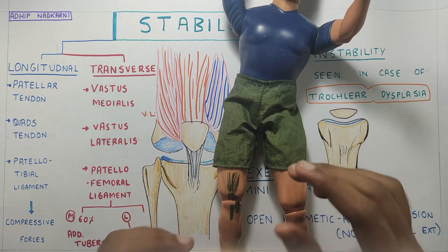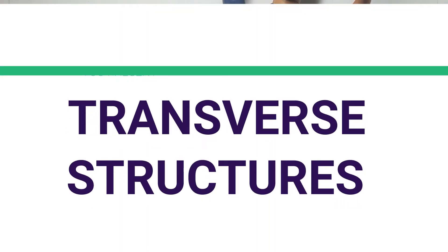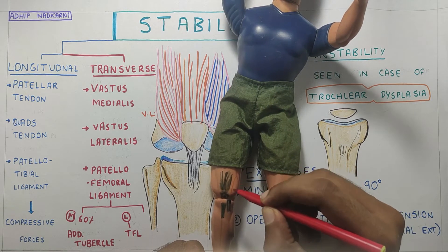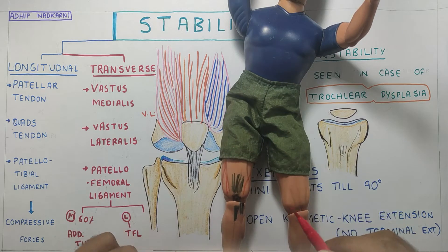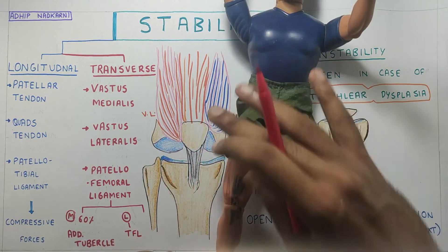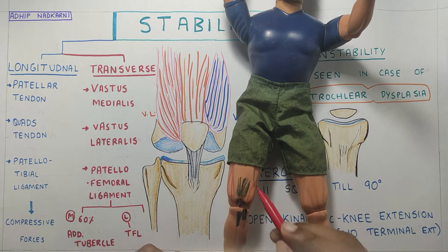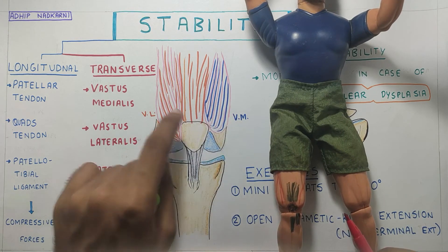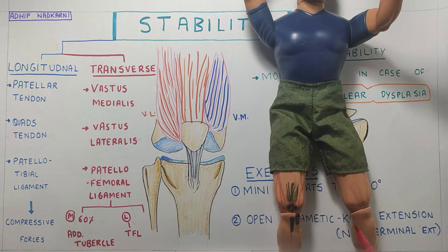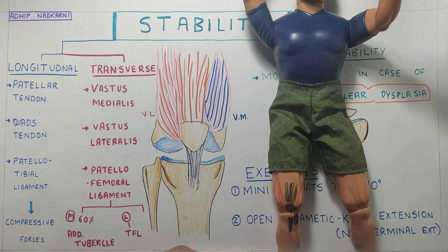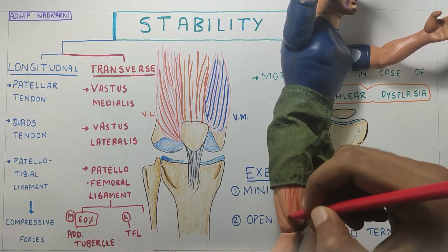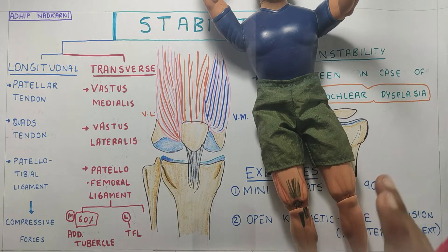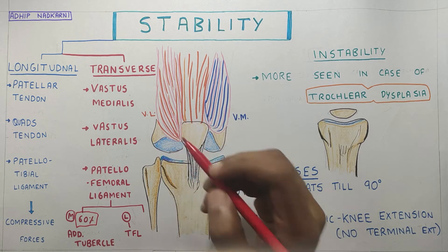Moving to the transverse structures: there is the vastus medialis on the medial side, called the teardrop, and the vastus lateralis on the lateral side. There is also the patellofemoral ligament connecting the patella to the femur on both medial and lateral sides. On the medial side, it attaches to the adductor tubercle and provides 60% of the stability to the patella — a very significant contribution. On the lateral side, the TFL provides lateral stability, and the lateral lip of the femur also contributes to stability.